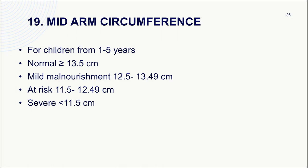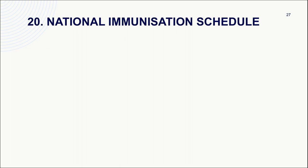Mid-arm circumference (MUAC) is commonly used for children between 1–5 years as it is an age-independent parameter. Normal is above 13.5 cm. Less than 13.5 cm to 12.5 cm indicates mild malnutrition; 11.5–12.5 cm indicates at-risk; less than 11.5 cm indicates severe malnutrition. Finally, the national immunization schedule is very important. A separate video covering the age, site, and route of administration of different vaccines is available and linked in the description and end screen.